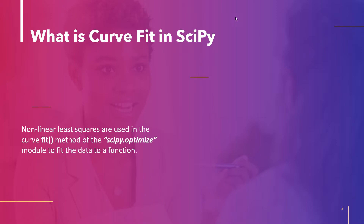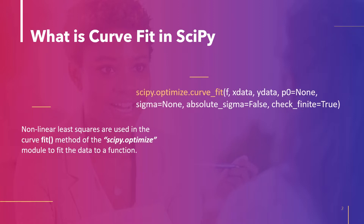The curve fit method of module scipy.optimize applies nonlinear least squares to fit the data to a function. The syntax of the method is as follows: scipy.optimize.curve_fit, where parameters are xdata — the independent variable used to measure the data. It can be any object but should typically be an m-length sequence or a k×m shaped array for a function with k predictors.